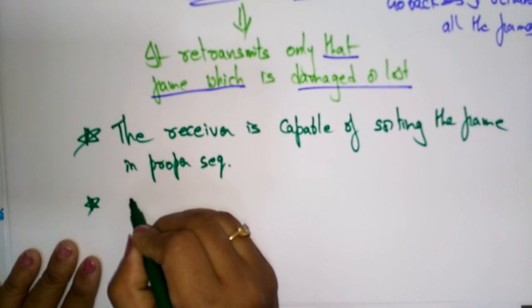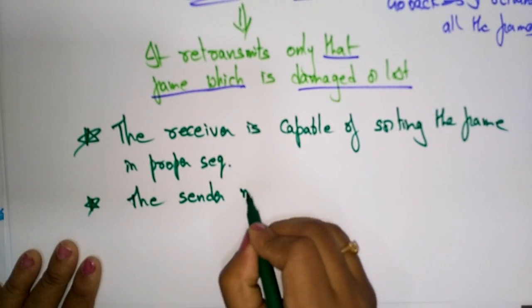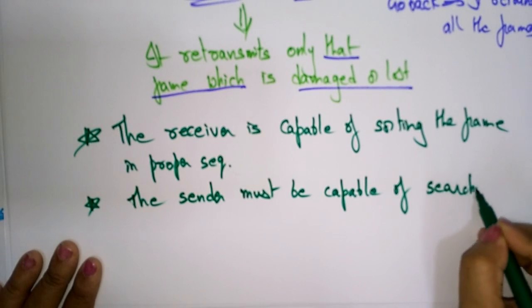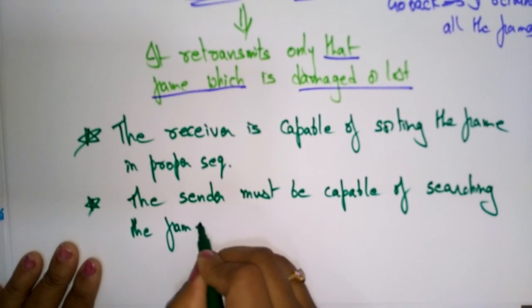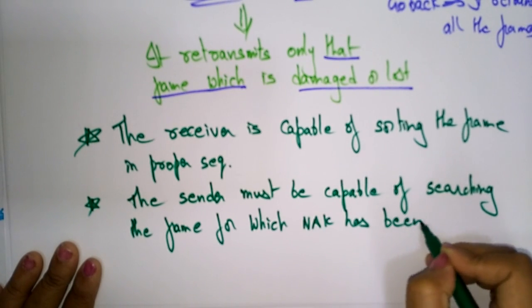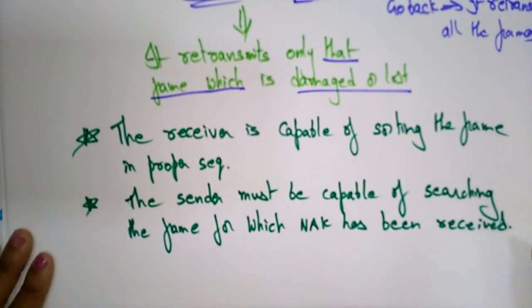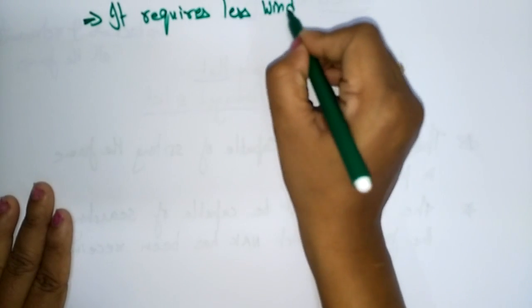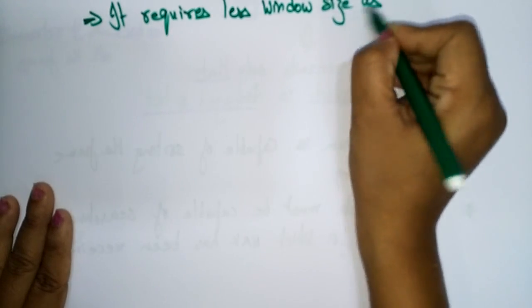That is one more action that Selective Repeat can do. The sender must be capable of searching the frame for which a negative acknowledgement has been received. Also, the receiver must contain a buffer to store all previously received frames on hold until the retransmitted frame is sorted and placed in proper sequence. It requires less window size as compared to Go-Back-N protocol.